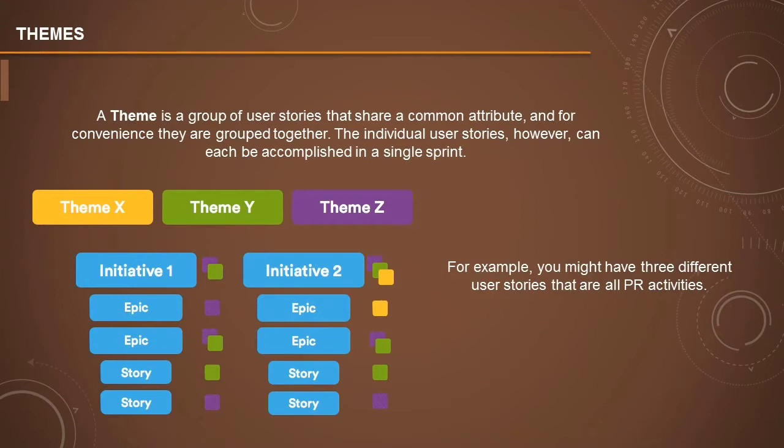Individual user stories can be accomplished in a single sprint. It's possible to take a particular story in each sprint, as we learned in the previous tutorial. For example, you might have three different user stories that are all PR activities, where public relation activities are user acceptance.